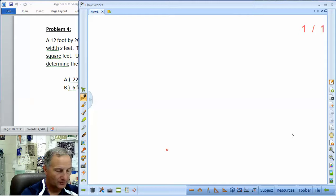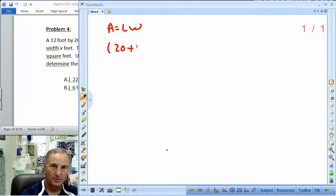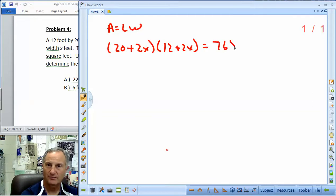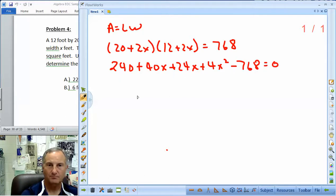So we've got a pool. It's a rectangle. So we know that area equals length times the width. Our length is 20 plus 2x. Our width is 12 plus 2x. And we know that length times width equals the area which is 768. So 20 times 12 is 240. 20 times 2x is 40x. 2x times 12 is 24x. I'm just foiling this. And 2x times 2x is plus 4x squared. I'm going to subtract our 768. So that equals zero.